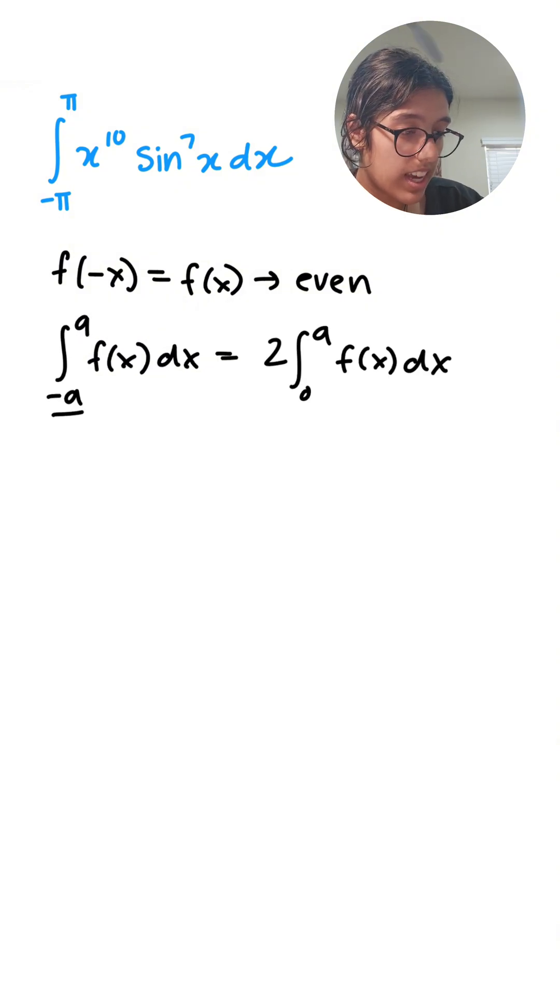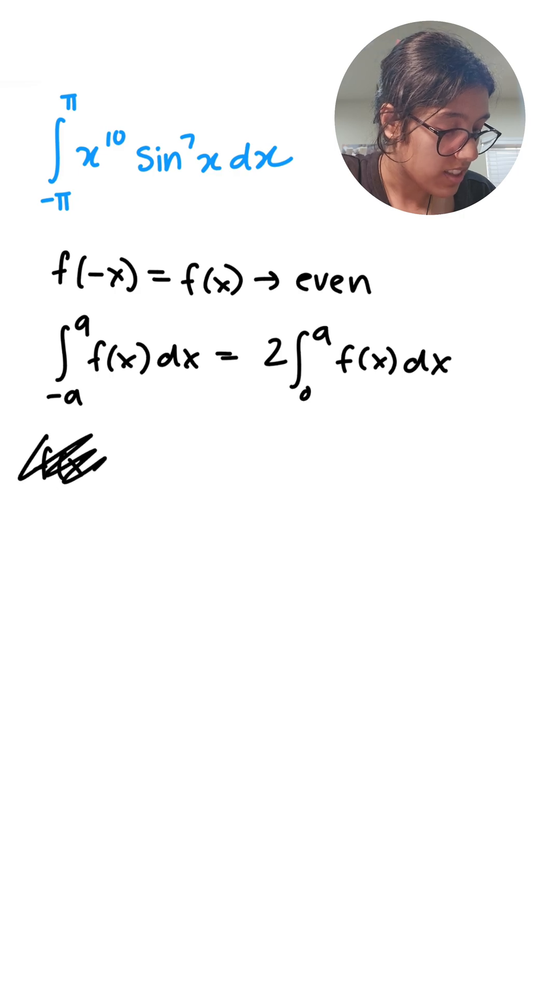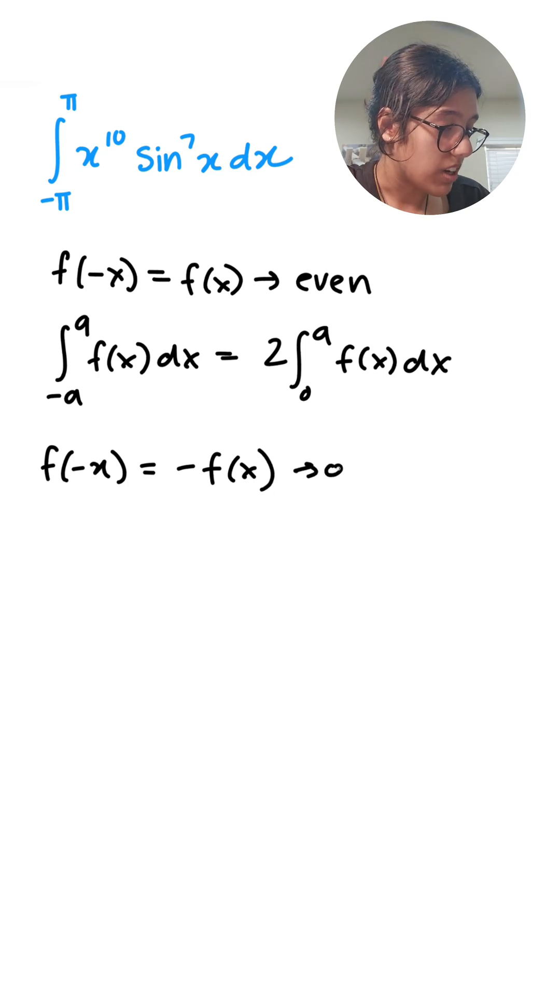We have negative a to a, and that would result in 2 times the integral from zero to a of f of x dx. But in the other case, if we have an odd function, that's basically saying f of negative x is equal to negative f of x. And when that is odd, then our integral would be zero.